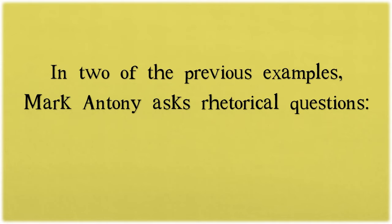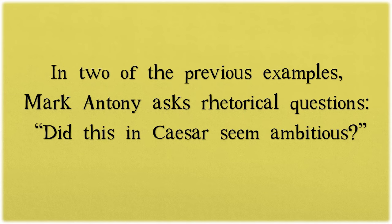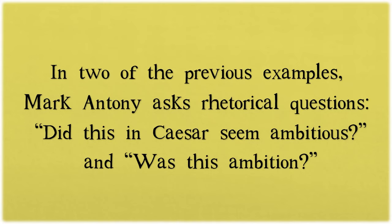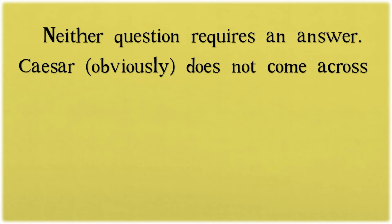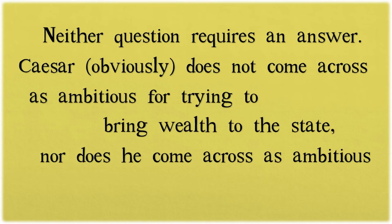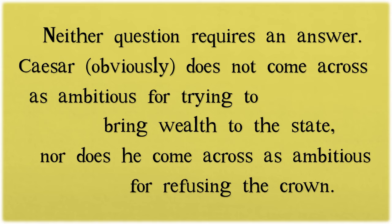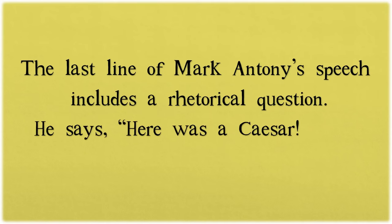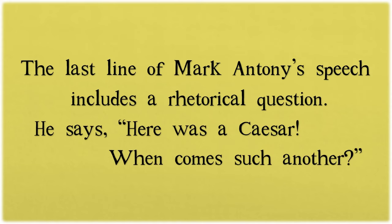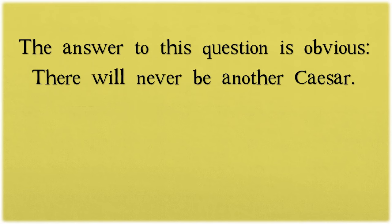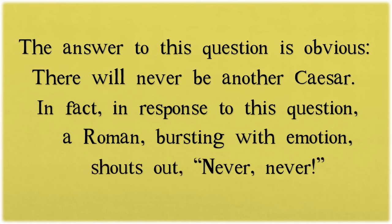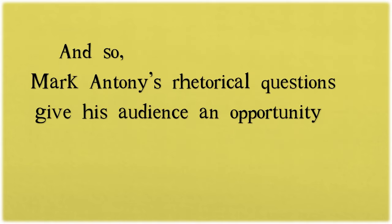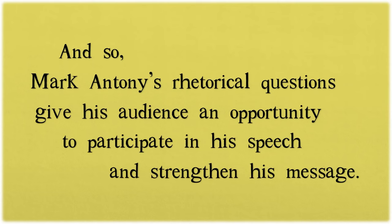In two of the previous examples, Mark Antony asks rhetorical questions: 'Did this in Caesar seem ambitious?' and 'Was this ambition?' Neither question requires an answer — Caesar obviously does not come across as ambitious for trying to bring wealth to the state, nor does he come across as ambitious for refusing the crown. The last line of Mark Antony's speech includes the rhetorical question: 'Here was a Caesar — when comes such another?' A Roman bursting with emotion shouts out 'Never! Never!' Mark Antony's rhetorical questions give his audience an opportunity to participate in his speech and strengthen his message.